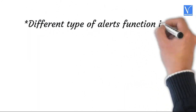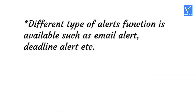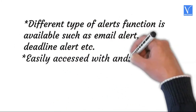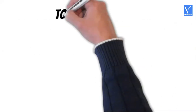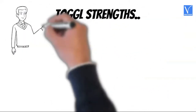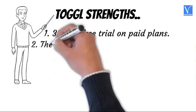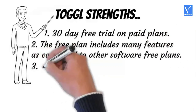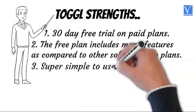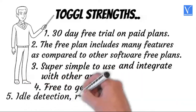Different types of alerts functions are available such as email alert, deadline alert, etc. Easily accessed with Android, iOS, Mac, Windows, and Chrome extension. Toggl strengths: 30-day free trial on paid plans, the free plan includes many features compared to other software free plans, super simple to use, integrates with other apps, free to get started, idle detection, reminders, and Pomodoro.